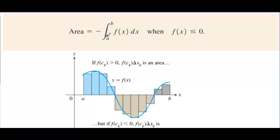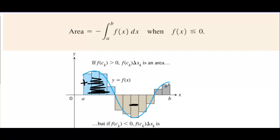The area equals the integral from a to b of f of x dx when f of x is less than or equal to zero. When the area is above the x-axis, it's considered positive. When we have area below the x-axis, it's considered negative. So a function from a to b can have some positive, negative, and then positive area.